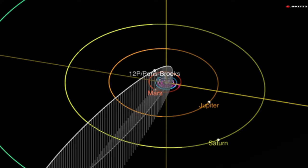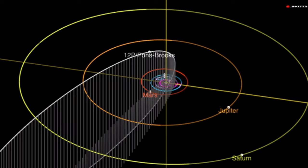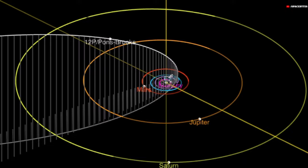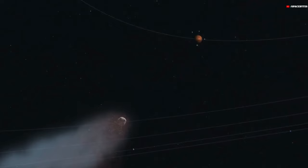Currently, 12P is speeding toward the inner solar system, where it will be slingshot around the sun on its highly elliptical orbit spanning 71 years, akin to the trajectory of the Green Comet Nishimura, which executed a nearly identical maneuver on September 17.